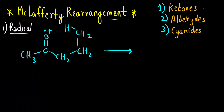We are going to see McLafferty rearrangement in these three compounds. One is ketones — ketones is this functional group. Aldehyde is CHO and cyanide is CN.